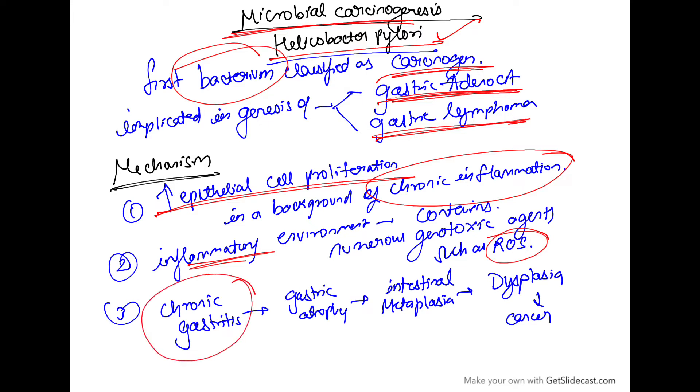because there is constant gastritis, it may lead to chronic gastritis which may lead to gastric atrophy, then intestinal metaplasia, then dysplasia and then it will lead to anaplasia cancers.